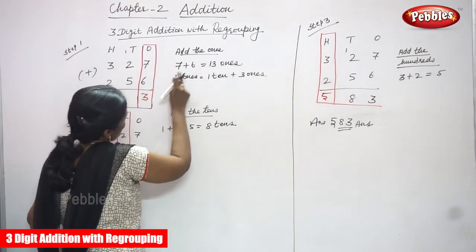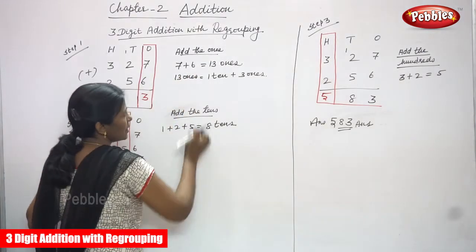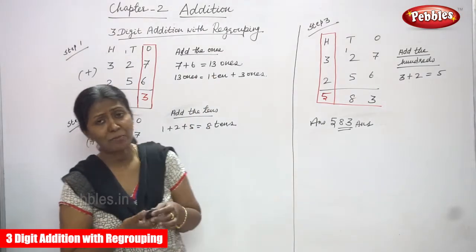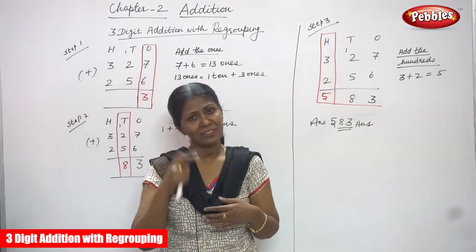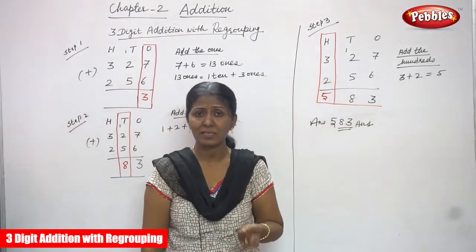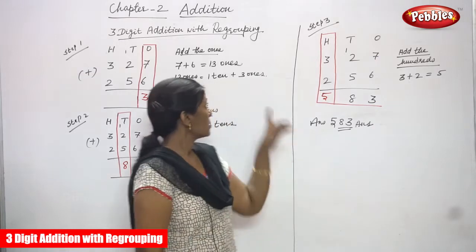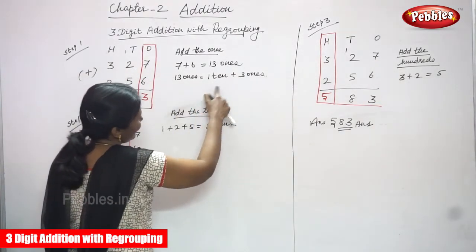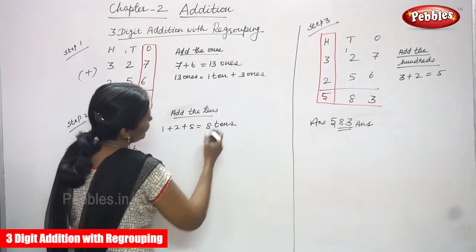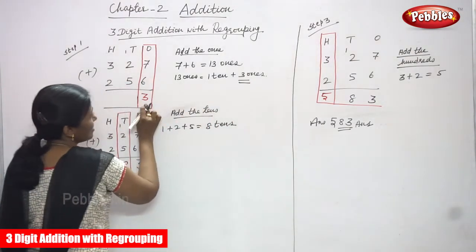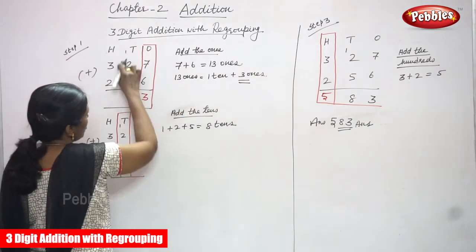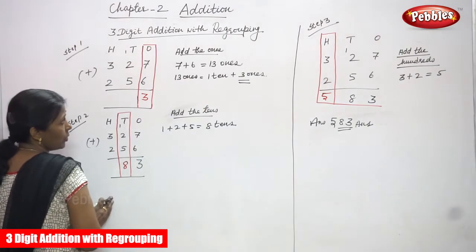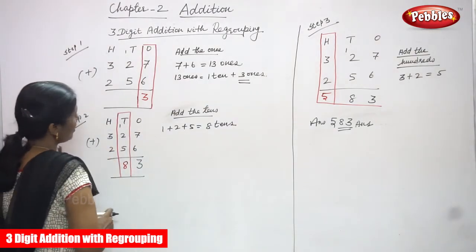Add the ones: seven plus six gives us 13 ones. How do we get 13? Seven in the mind, six on the fingers — after seven: eight, nine, ten, eleven, twelve, thirteen. So thirteen ones is split into one ten and three ones. I write only the three in the ones place, and the carryover one ten goes to the tens place. Step one is over.